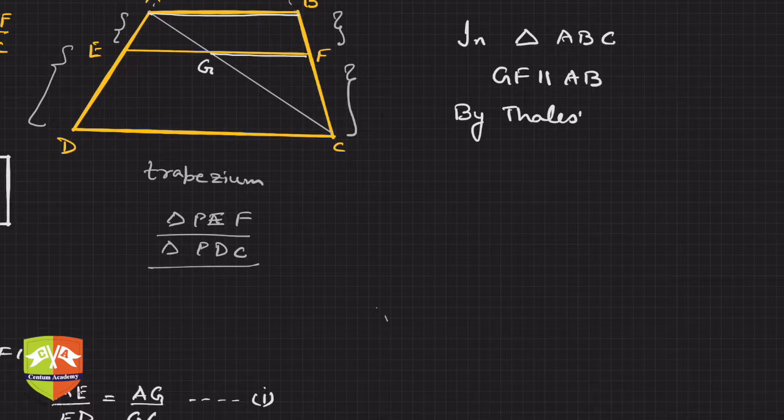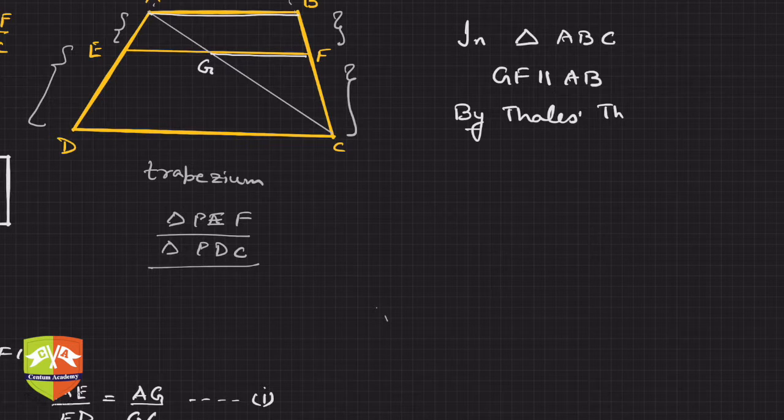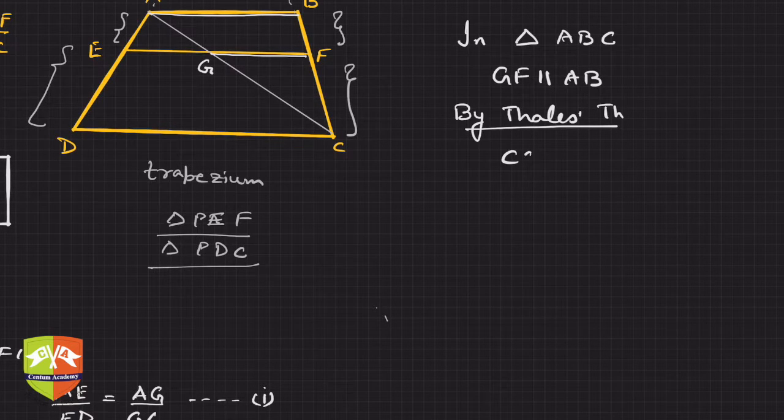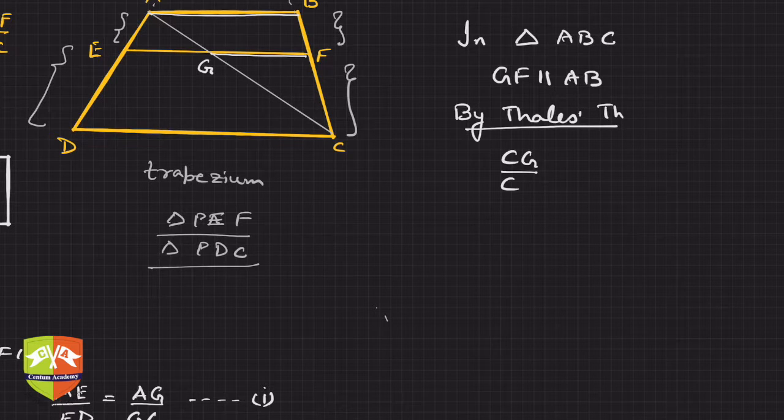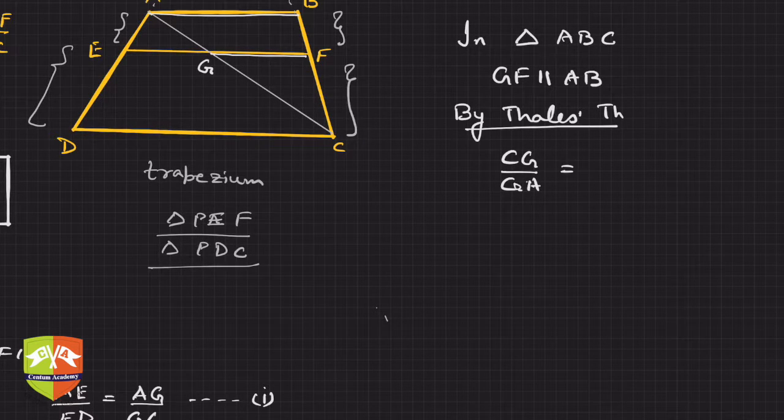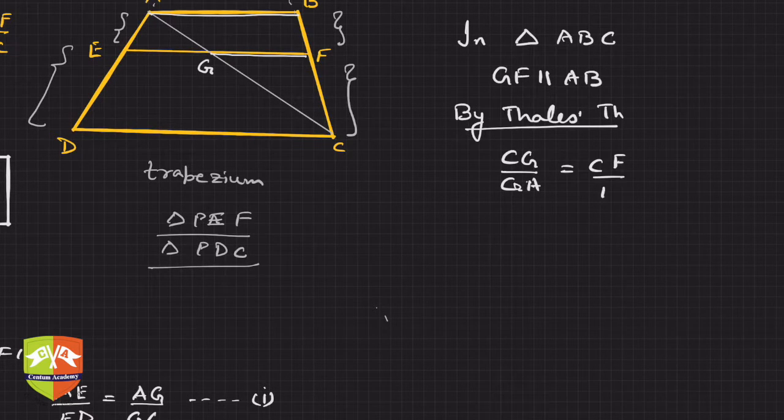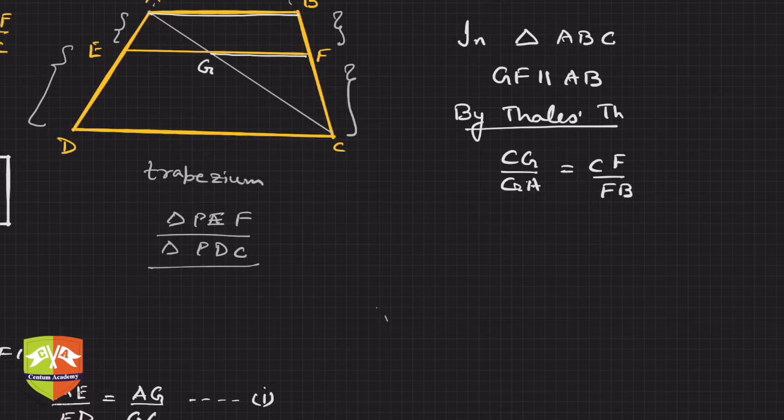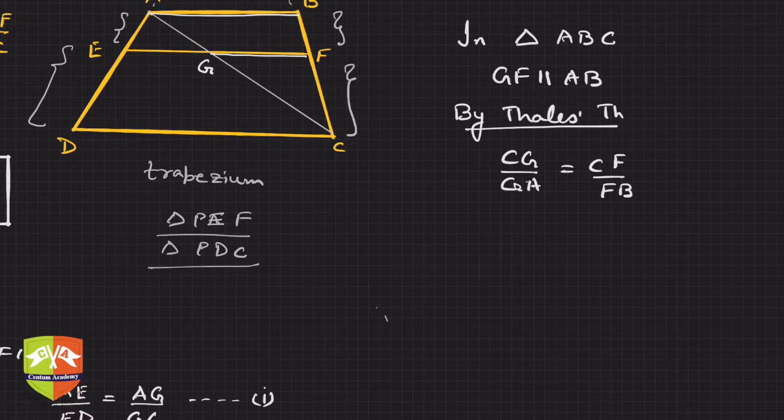Hence we can say GF is parallel to AB, isn't it? This means by BPT again, by Thales' theorem or BPT whichever way you want to write, Thales' theorem again.